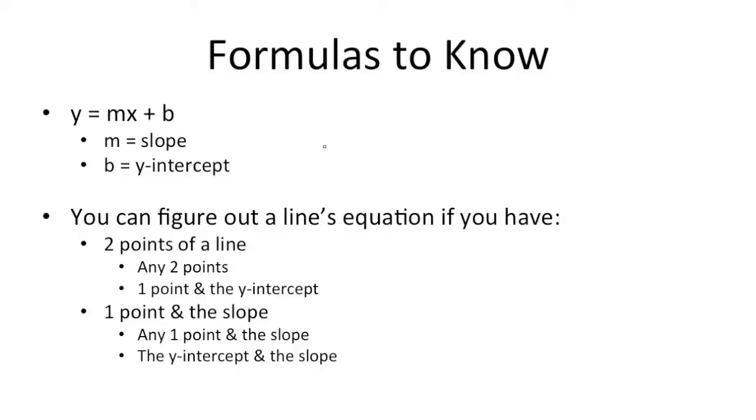So another thing you're going to need to know about Cartesian planes is the slope-intercept form of an equation, which is y equals mx plus b. Here, x and y just refer to the x's and y's we've been dealing with. m refers to the slope of the line and b refers to the y-intercept of the line.